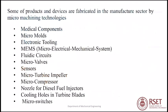Some products and devices fabricated using micro machining technologies include medical components, micro molds, electronic tooling, MEMS — micro electrical mechanical systems — fluidic circuits, micro valves, sensors, micro turbine impellers, micro compressor nozzles for diesel fuel injectors, cooling holes in turbine blades, and micro switches.